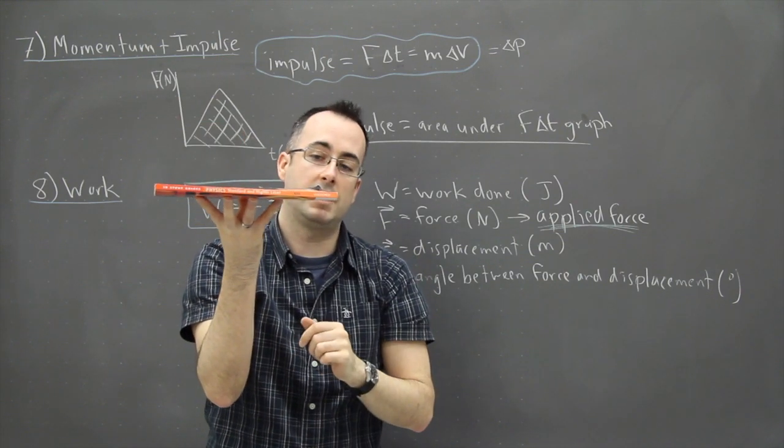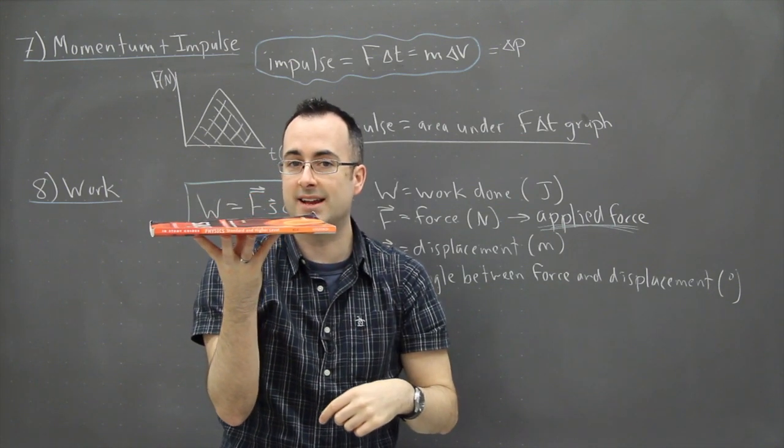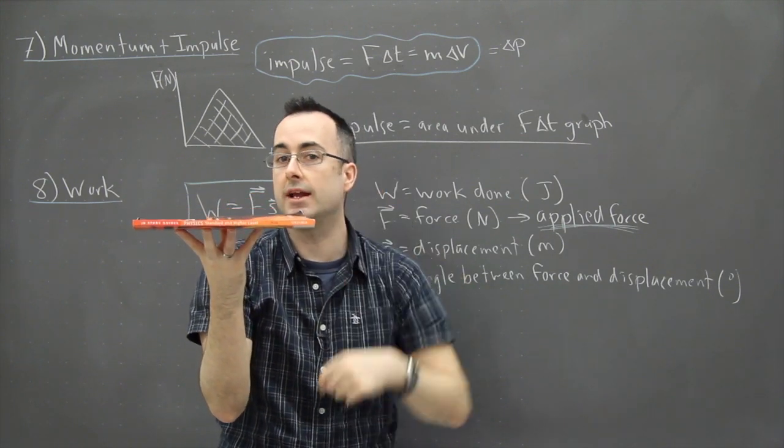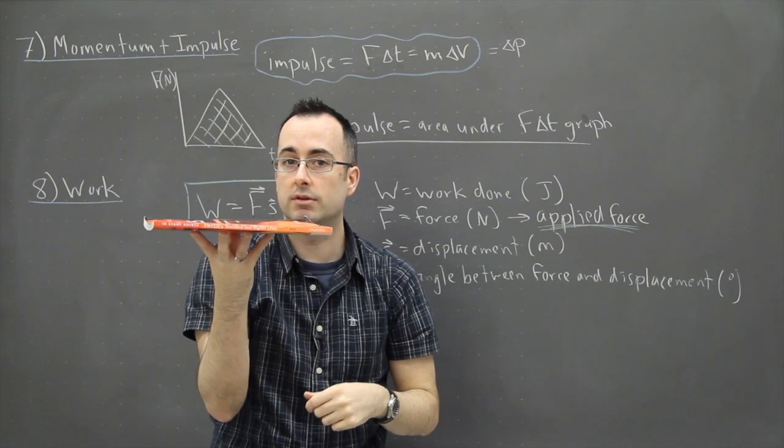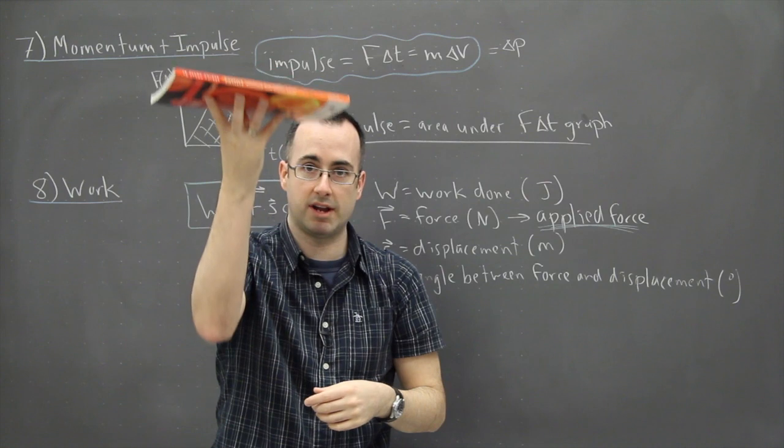However my displacement is down. So the angle between them is 180 degrees. That's why the cosine of 180 is negative one. So that's a way to look at this.